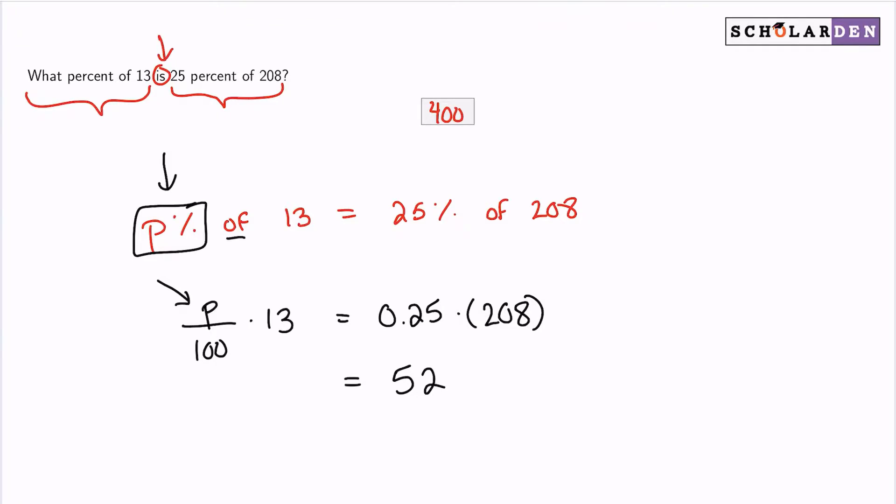So now we have 13P divided by 100. So now we will multiply by 100 on both sides, allowing us to eliminate on the left. 52 multiplied by 100. And I'll move my work over here at the top. 13P equals 5,200.